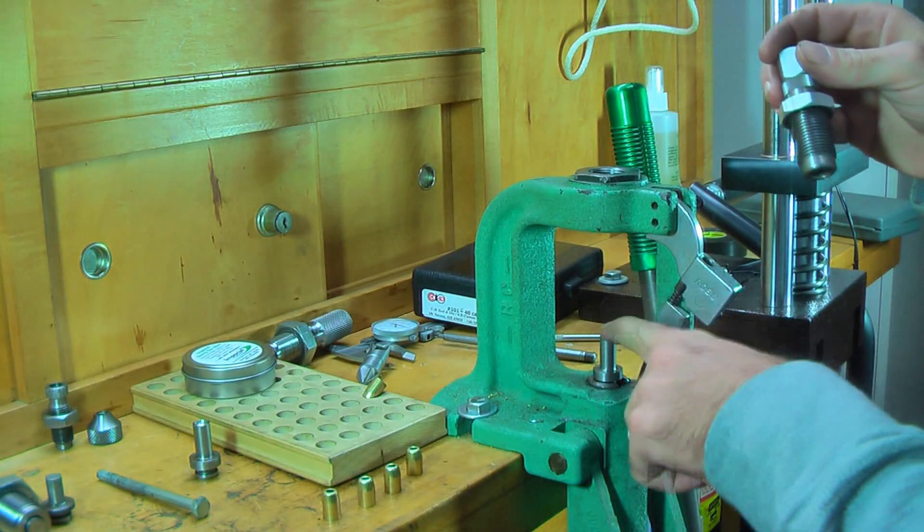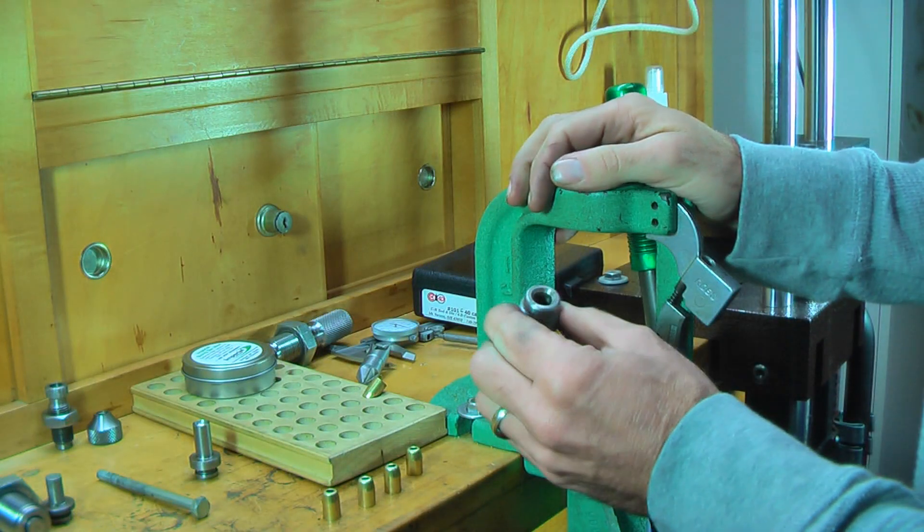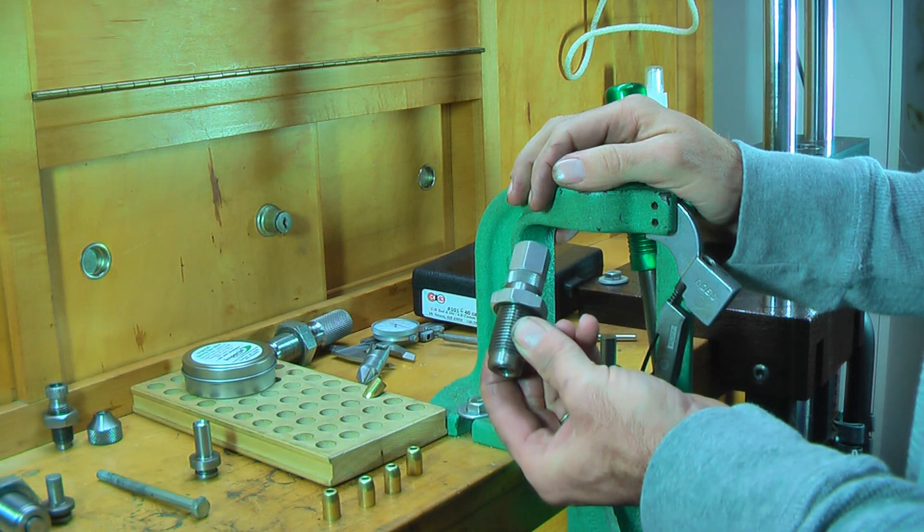Okay, what we have here, we still have our swage punch in here. We're using the expanding die from Lee.